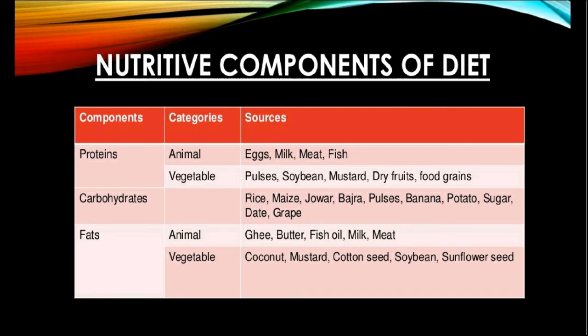On the other hand, if an individual takes the right amount of carbohydrates, his body weight starts increasing and he experiences high body temperature, in which condition an individual becomes lethargic. Sources of carbohydrates generally include rice, maize, chowar, bajra, pulses, gram, dry peas, dates, grapes, potato, banana and sugar.